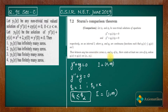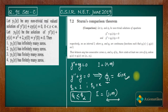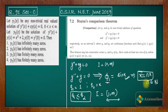According to the theorem, between any two consecutive zeros x1 and x2 of φ1, there exists at least one zero of φ2. Here φ1's solution is sin(x). We know sin(x) has infinitely many zeros: x = nπ where n belongs to the natural numbers.